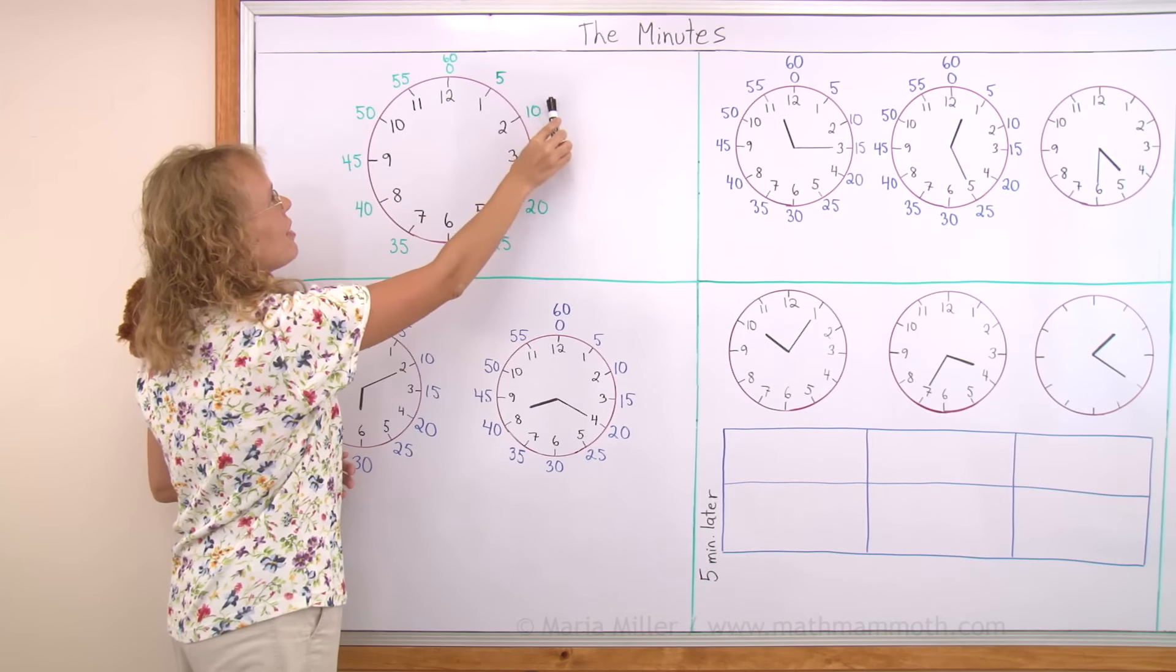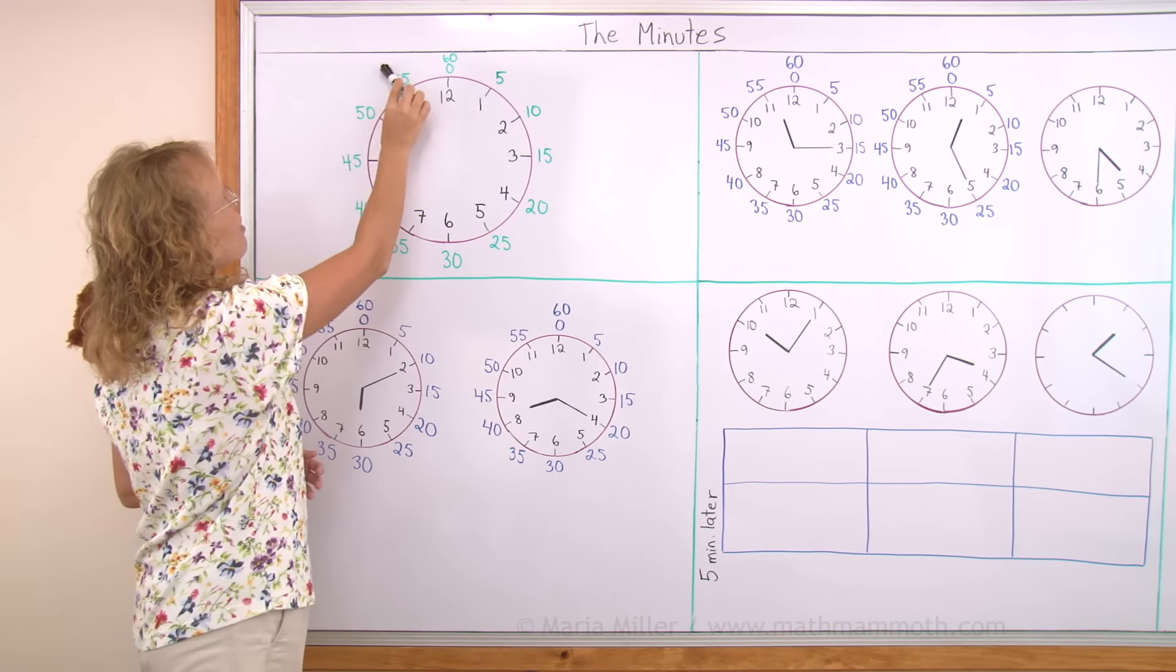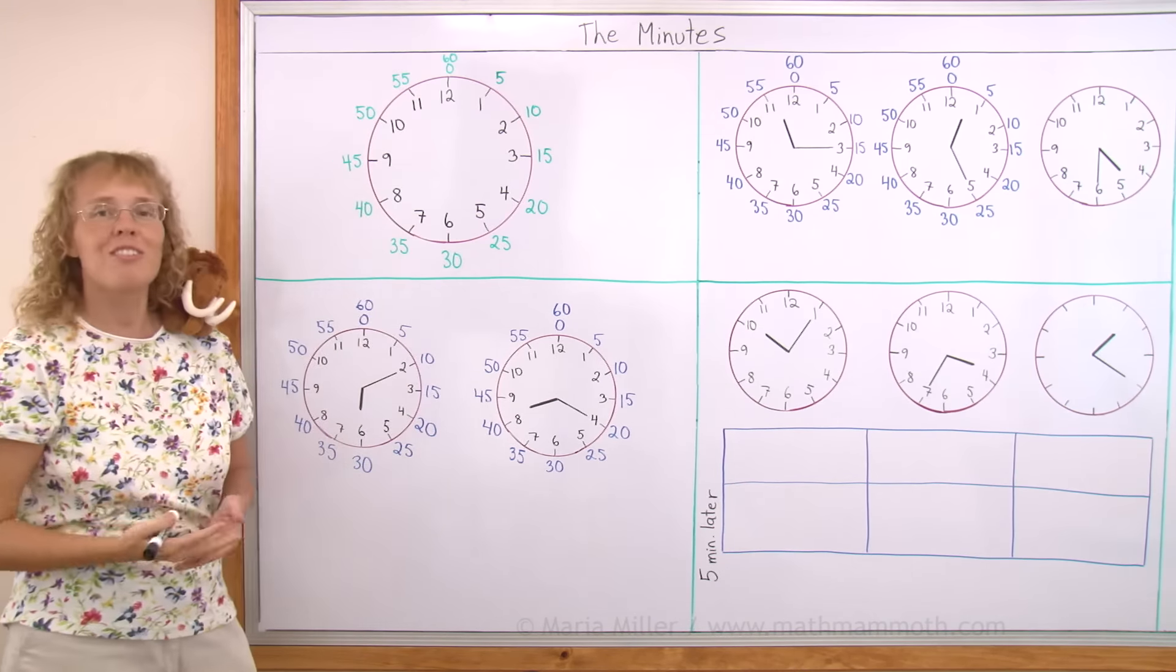Let me show you how it works. We have 5, 10, 15, 20, 25, 30, 35, 40, 45, 50 and 55 and 60. Those are for the minute hand.